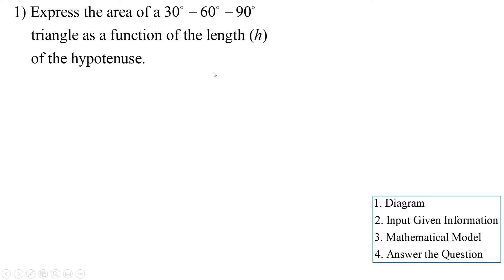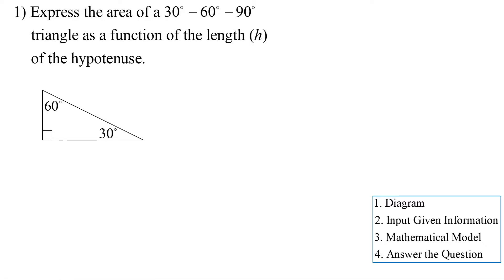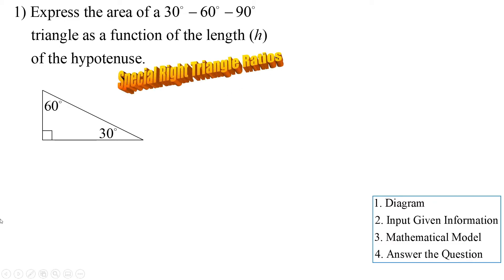First, draw a 30-60-90 degree right triangle — there's the 90 degree angle, the 30 degree angle, and the 60 degree angle. Go back to your geometry class and remember the special right triangle ratios. If the shorter leg is 1, that makes the longer leg root 3 and the hypotenuse 2. So 1 to root 3 to 2 are the special right triangle ratios for a 30-60-90 degree right triangle.